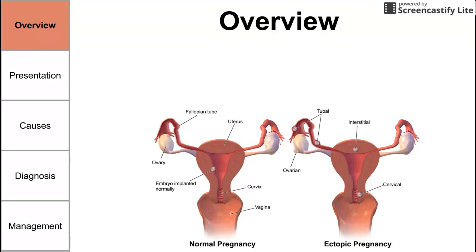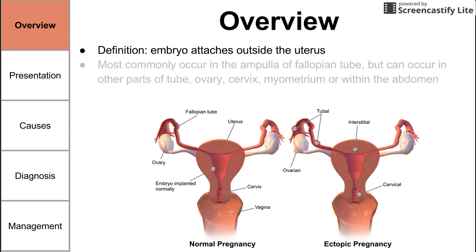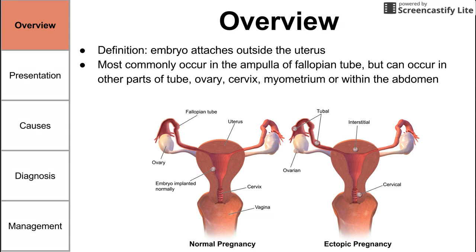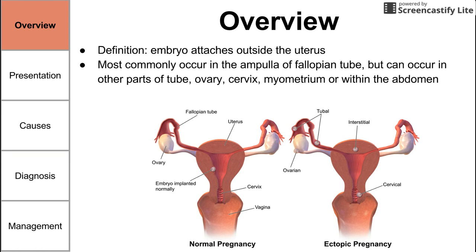Ectopic pregnancy is by definition when the embryo attaches outside of the uterus. The embryo can attach in several locations. It most commonly occurs in the ampulla of the fallopian tube. It can also occur in other parts of the tube closer to the fimbriae, in the ovary, in the cervix, in the myometrium as an interstitial ectopic pregnancy, or even outside of the tubes in the abdomen as an intra-abdominal pregnancy.